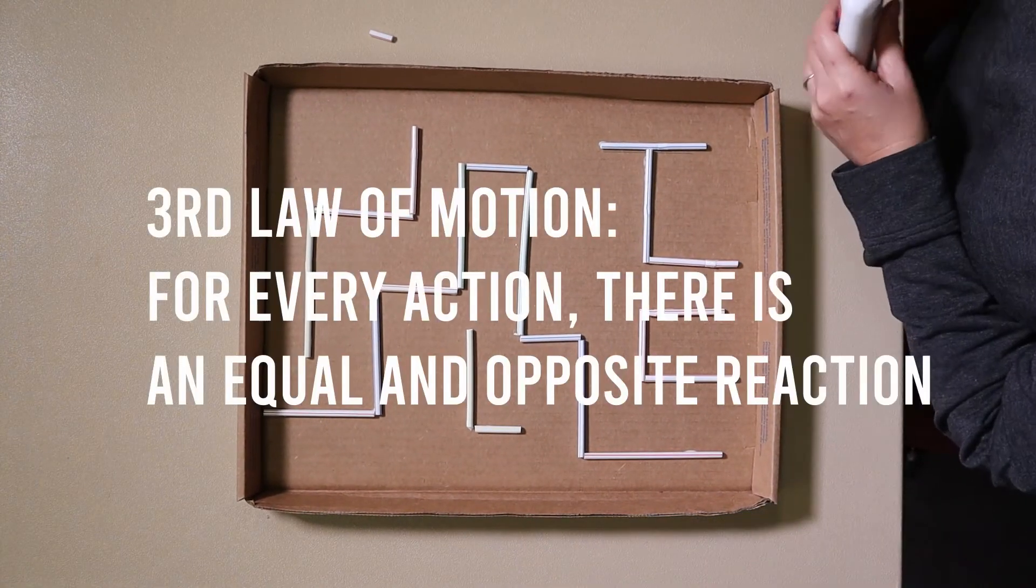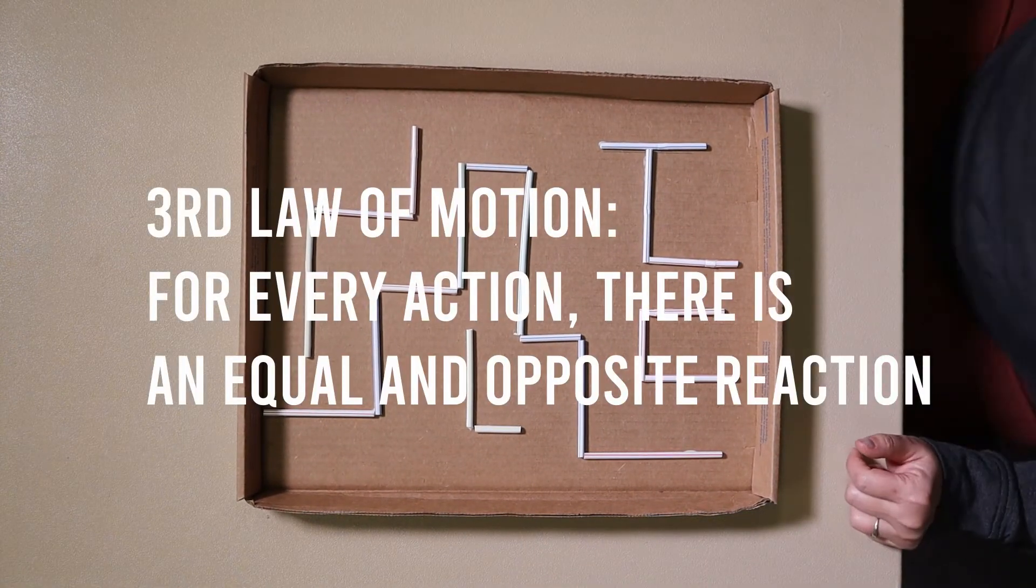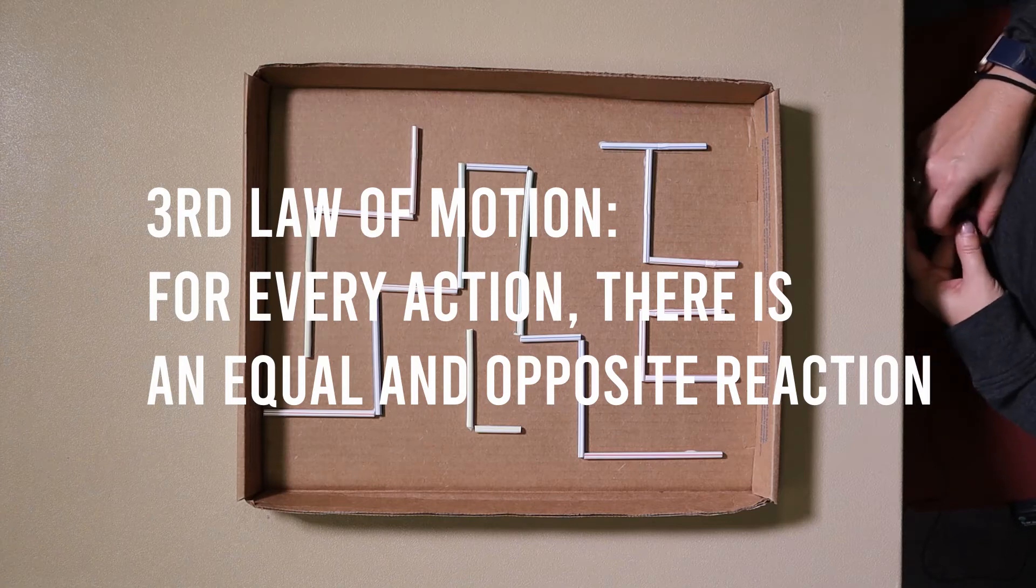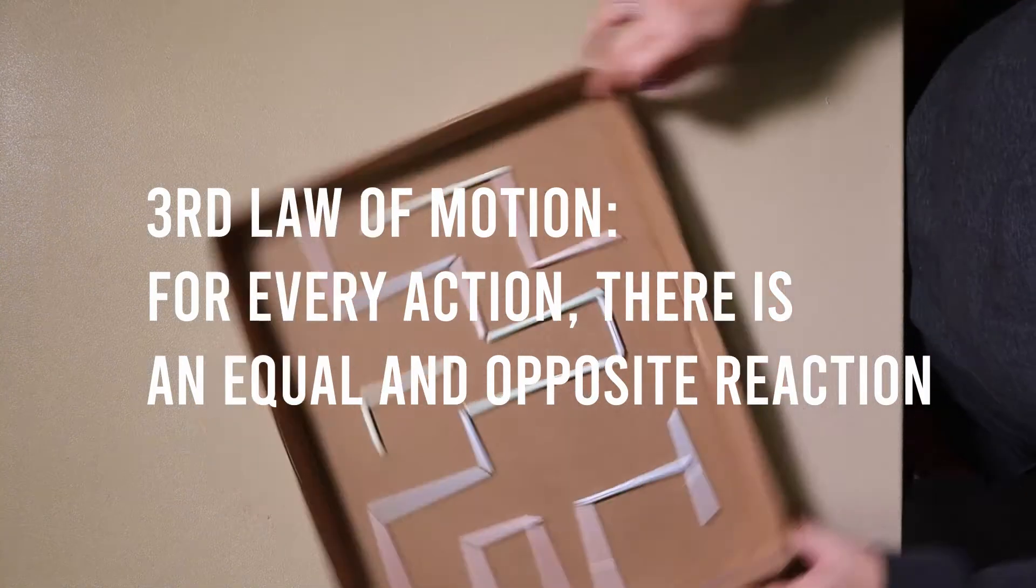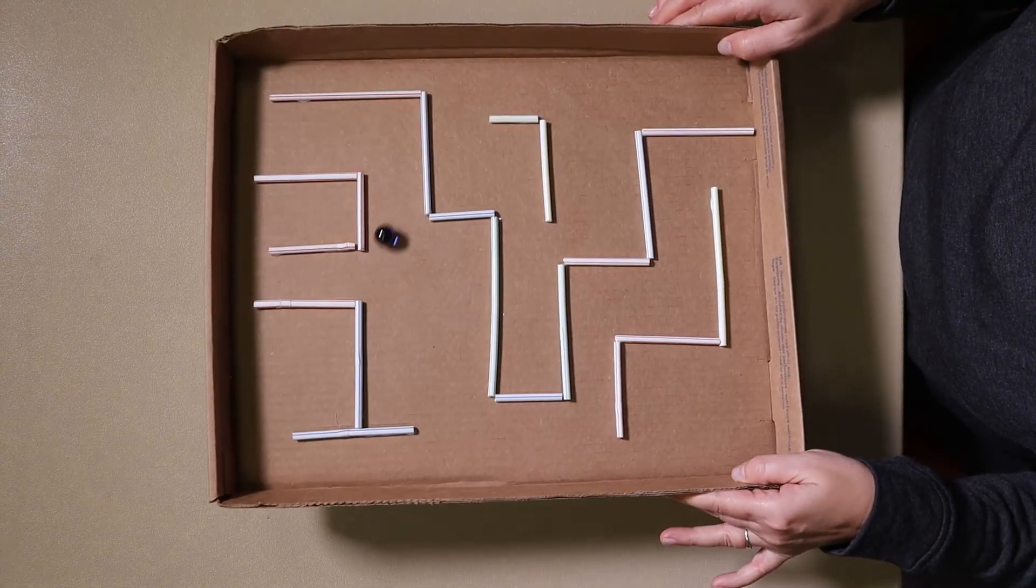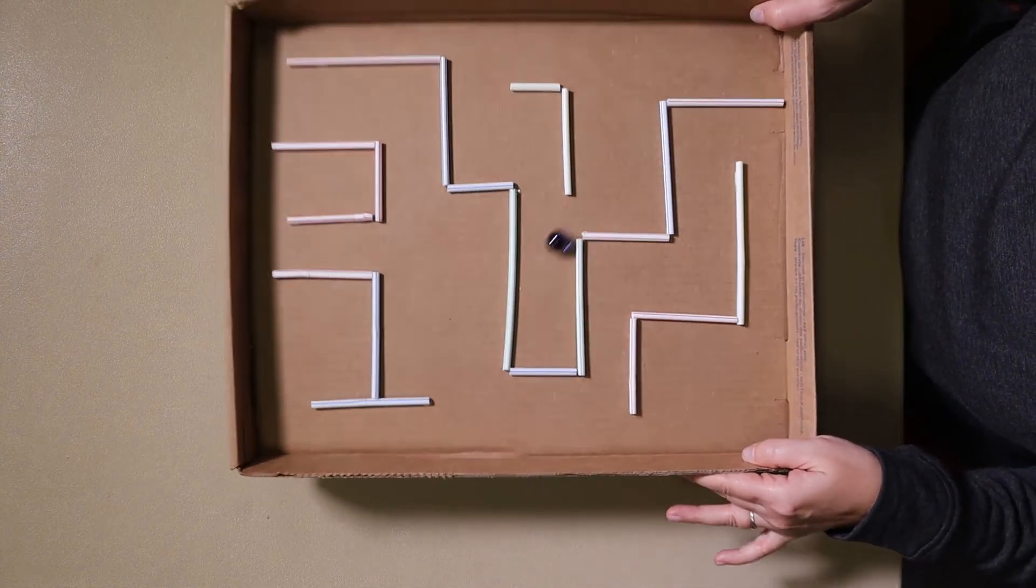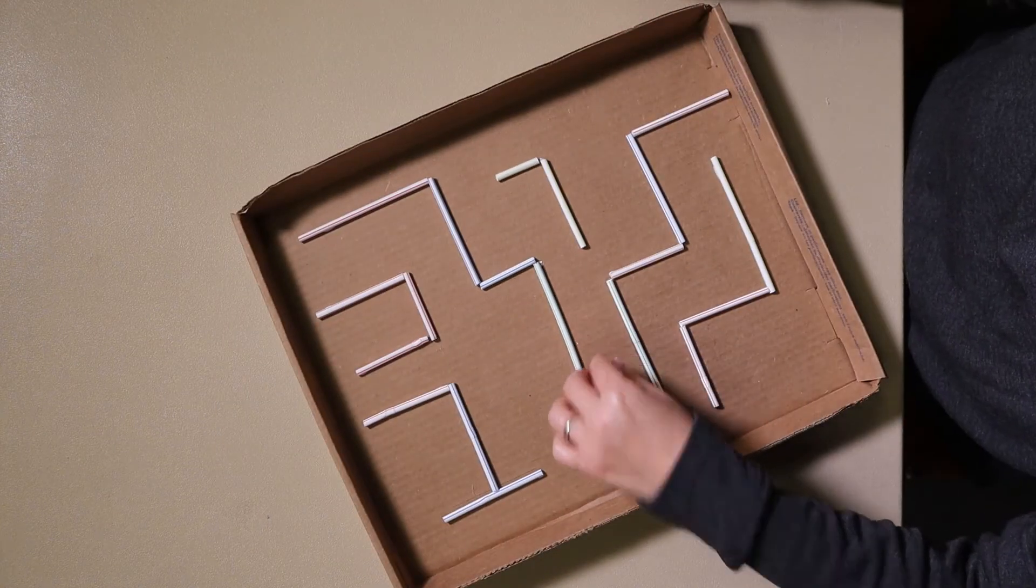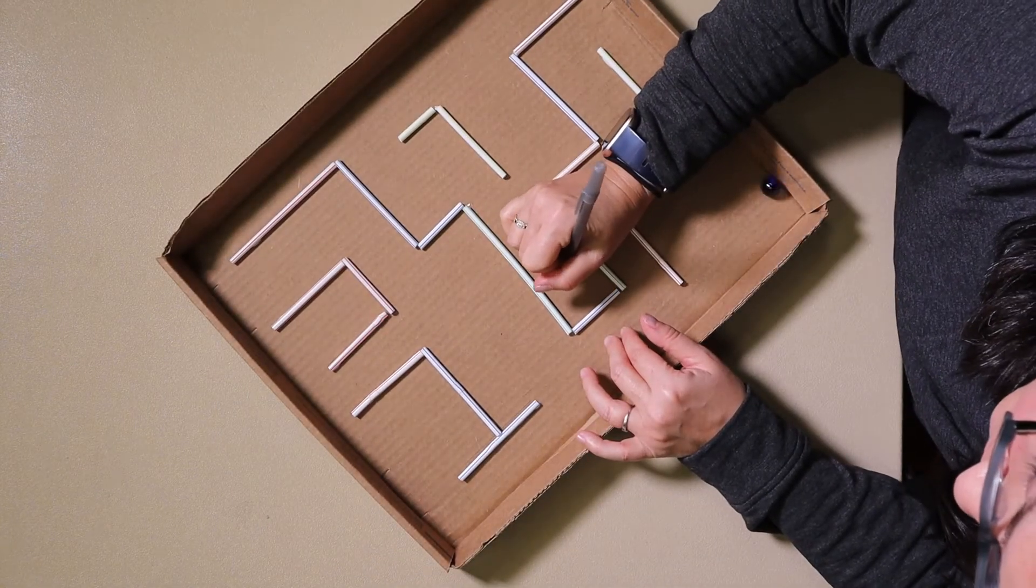Newton's third law says that for every action, there is an equal and opposite reaction. Newton figured out that every time an object is pushed, it applies the same amount of force in the opposite direction. Everything you push will push you back. If the force is small, the push might not even be noticeable, but whatever is pushed always pushes back.